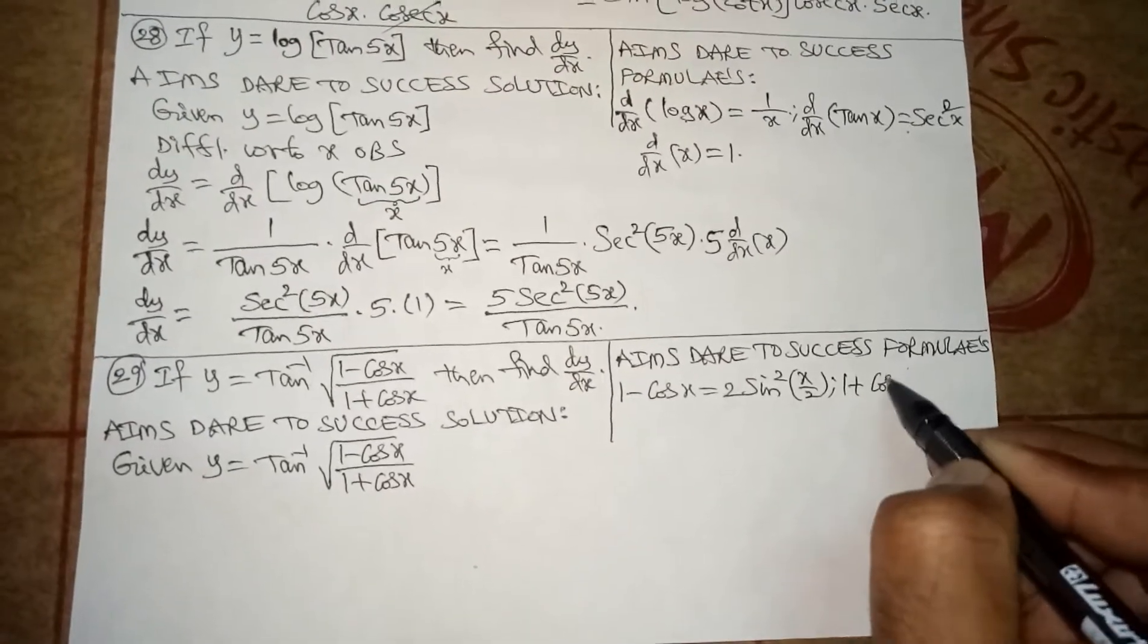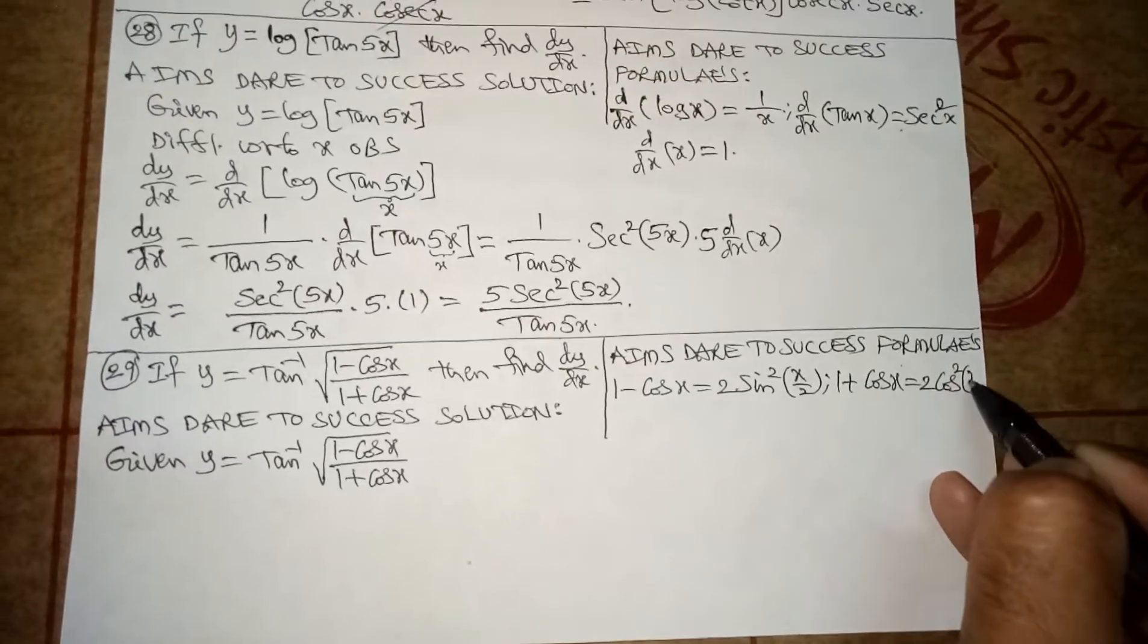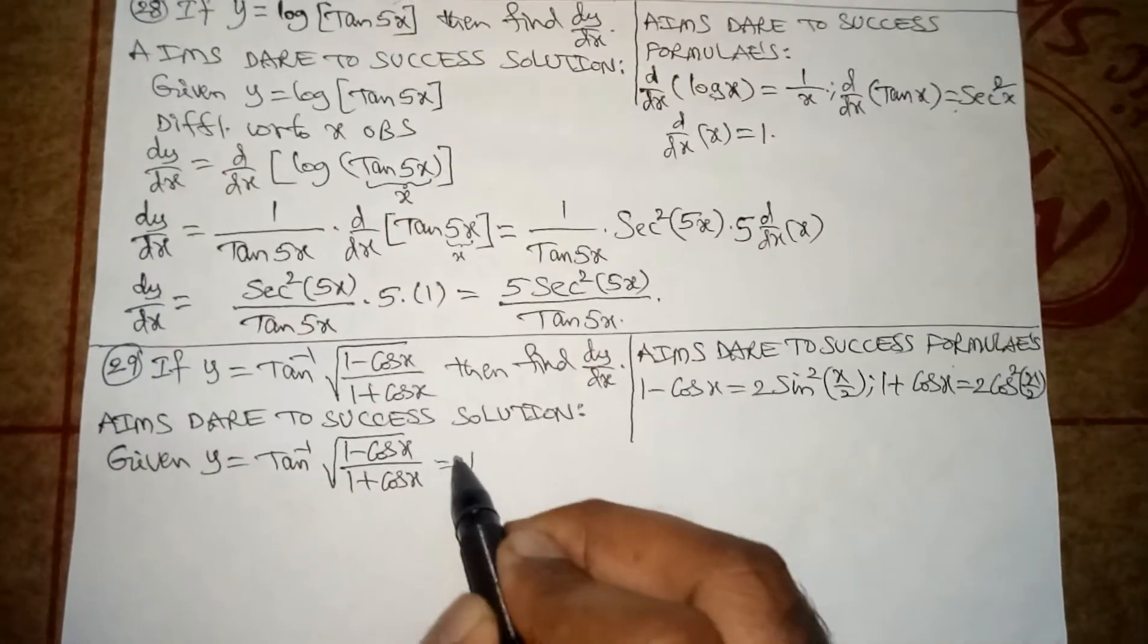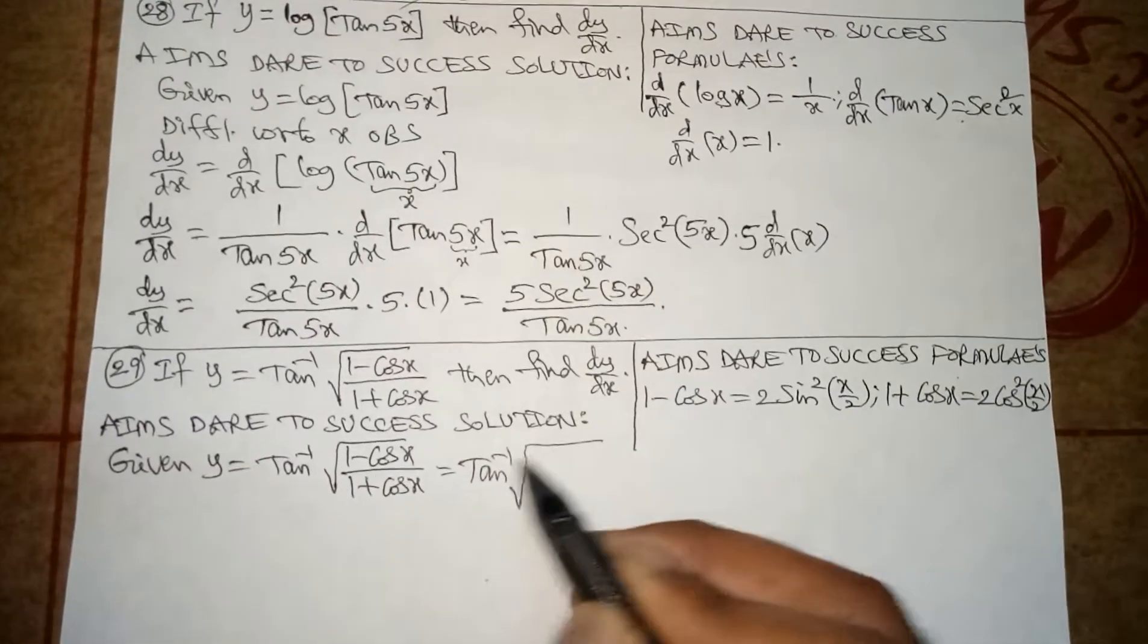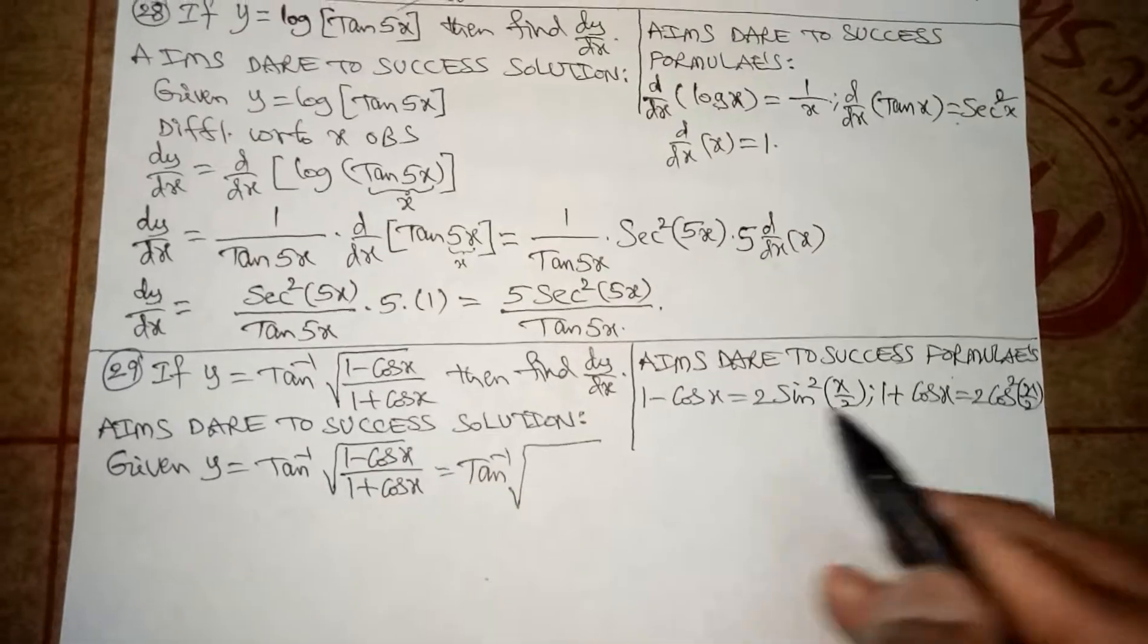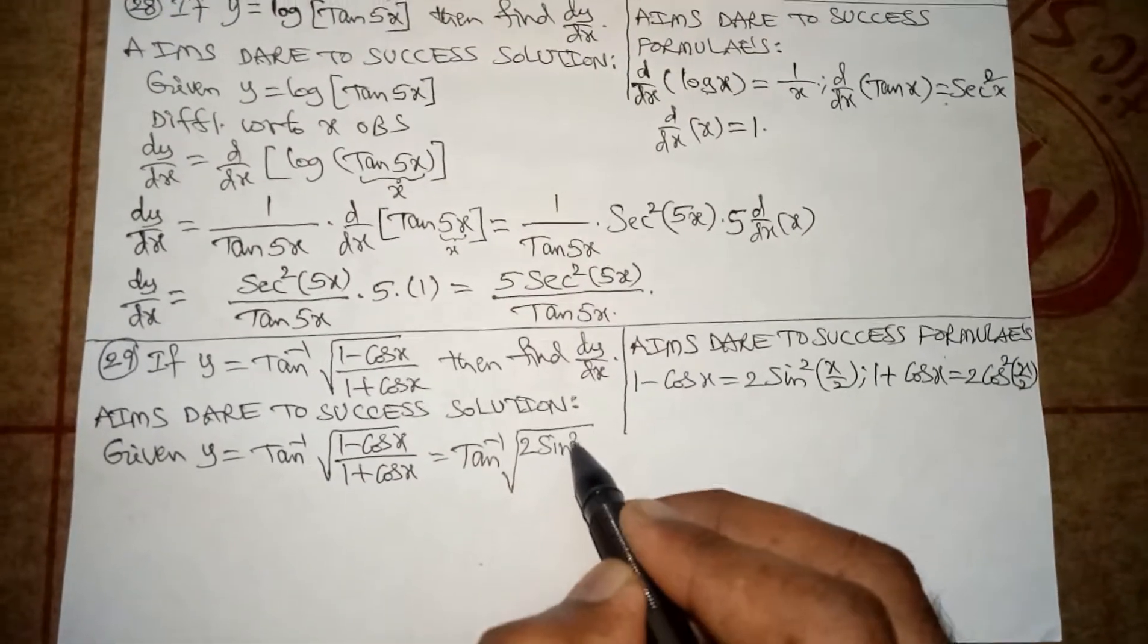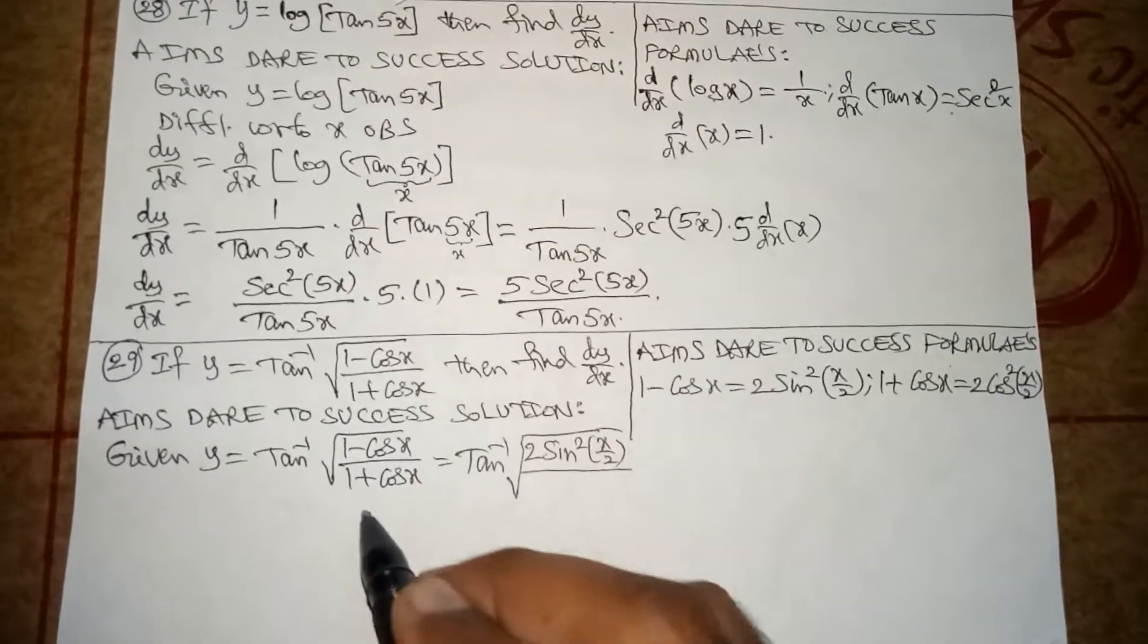Now I am writing same values here. We get tan inverse of root[(1 minus cos x value is 2 sine square(x by 2)) by (1 plus cos x value is 2 cos square(x by 2))].